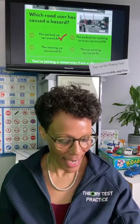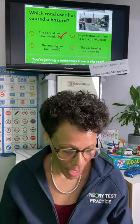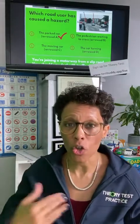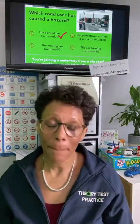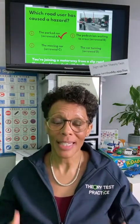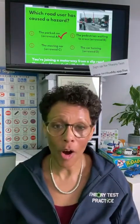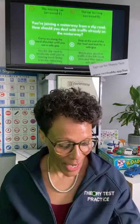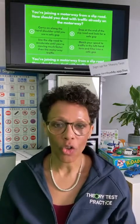The answer is A — the parked car is on zigzag lines. You should not park on zigzag lines. Lots of road markings mean more danger and more restrictions. Parking there means drivers won't be able to see who's crossing, and pedestrians crossing won't be able to see up and down the road. That parked car is causing the hazard.